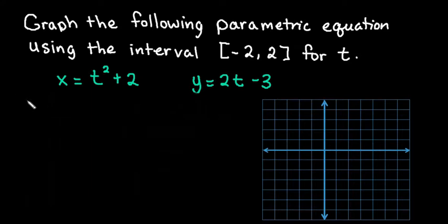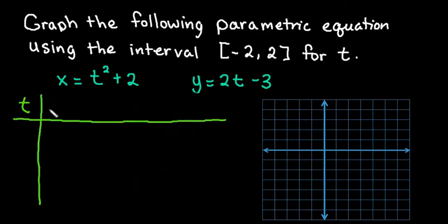So basically what this is telling us to do is we're going to set up a table for the t values, the x and y values also. We are going to pick values for t that fall in the given interval.